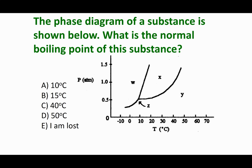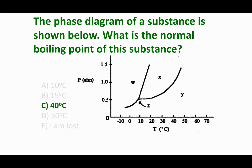Let's finish with a small quiz: using this phase diagram, what is the normal boiling point of this substance? To find the normal boiling point, we want to go from liquid to gas. First, label the regions — solids are leftmost and topmost, gases are bottom right, and liquids are in the middle. The normal boiling point means crossing the liquid-gas line at 1 atm. Going across at 1 atm and dropping down, we see this occurs at about 40 degrees Celsius.